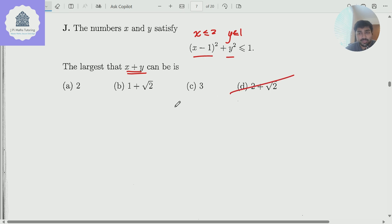And 2 plus root 2, well, that's bigger than 3. So I can ignore that. But also, I can rule out 3 as well. Because if x plus y equaled 3, then x would be 2 and y would be 1. But then I'd have 1 plus 1, which is 2, not less than or equal to 1. So it can't be 3 either.